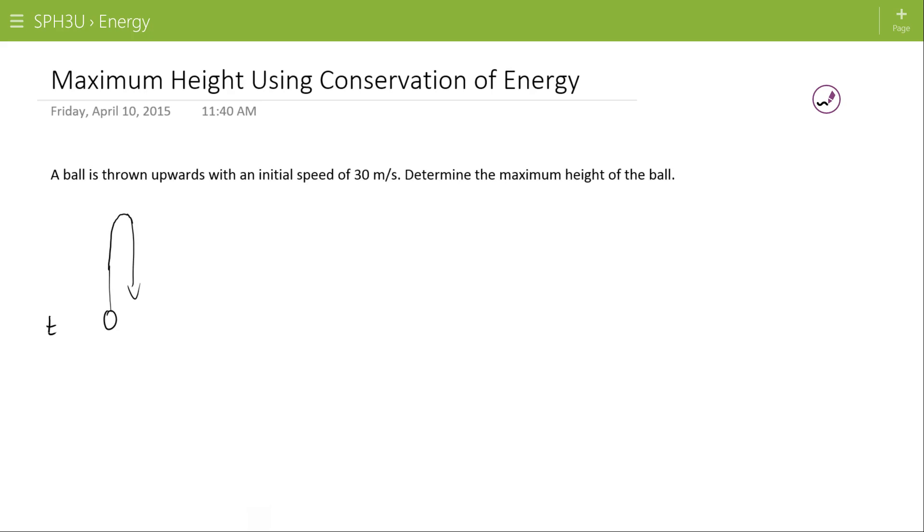So what we're assuming at the bottom is that we have all kinetic energy and we're going to assume at the top we have all gravitational potential energy. So the kinetic is going to slowly decrease and the gravitational increase until you reach this maximum height h, and then it'll fall back down and get converted back into kinetic.